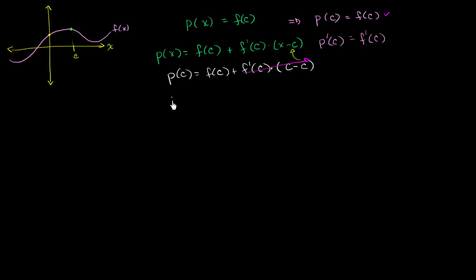So p prime of x is going to be the derivative of this, which is just 0 because this is going to be a constant, plus the derivative of this right over here. And what's that going to be? Well you can expand this out to be f prime of c times x minus f prime of c times c, which would just be constant. So if you take the derivative of this thing right here, you're just going to be left with an f prime of c. So the derivative of our polynomial is now constant. So obviously if you were to evaluate this at c, p prime at c, you're going to get f prime of c.